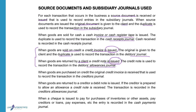When goods are purchased on credit, the credit invoice is received from the creditor and the transaction is recorded in the creditors journal. So when we receive goods bought on credit, we receive an invoice. When goods are returned to a creditor, a debit note is issued and sent with the goods to tell the creditor why we are returning the goods or asking for an allowance. A creditor is a liability and will have a credit balance, so if we want to reduce a creditor in our books, we will have to reduce it on the debit side. Therefore, a debit note is issued.